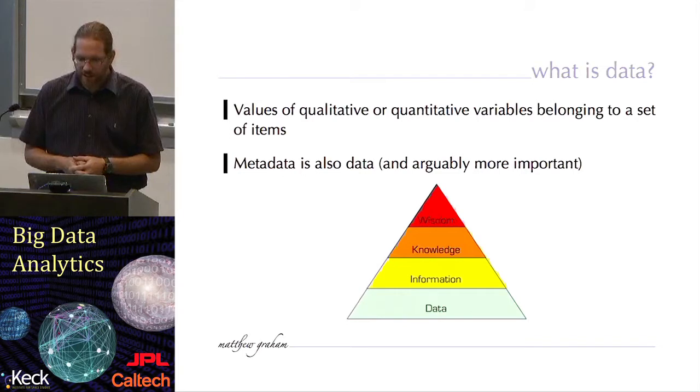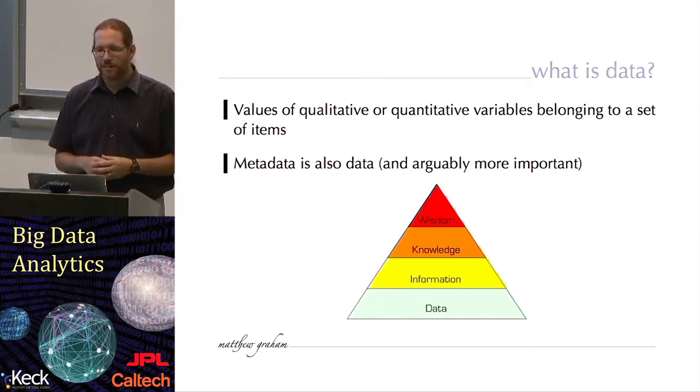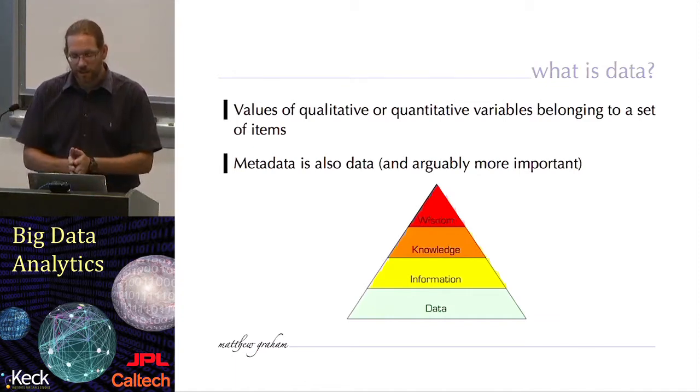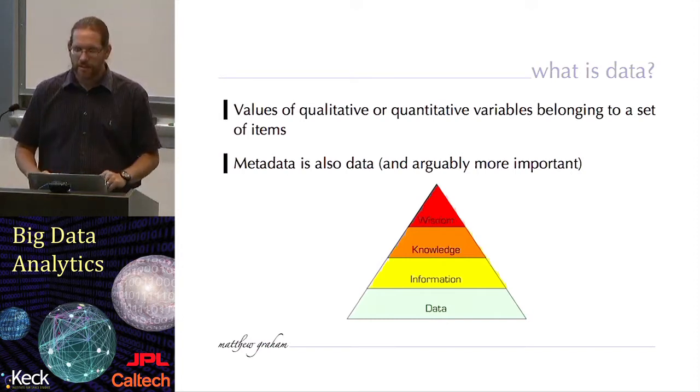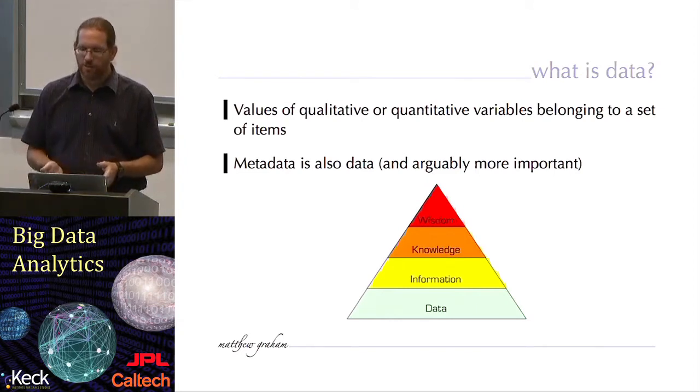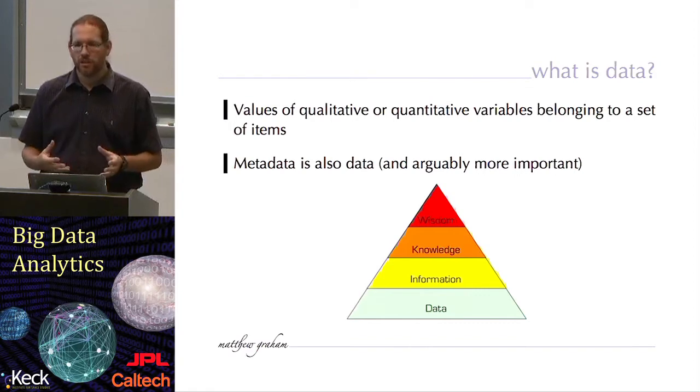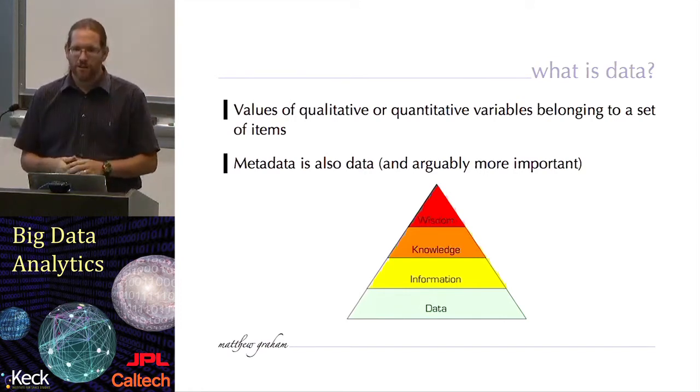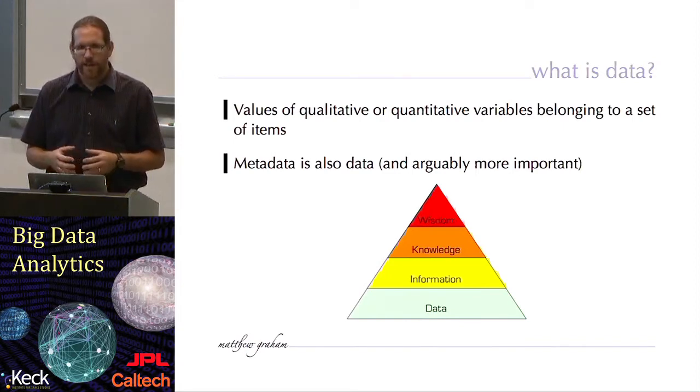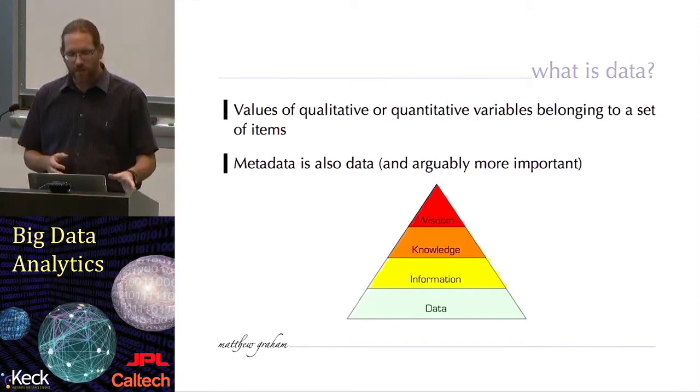There is this idea that the purpose of doing data analytics or doing data science is to extract information out of data, and there's this particular pyramid structure that you can see where you have data on the bottom layer, and the idea is that the cognitive value of what you're doing increases as you progress up the pyramid. So from data, we extract information, we combine information together to gain knowledge, and then ultimately, we're after wisdom derived from the knowledge. It's possibly a somewhat philosophical or fanciful notion, but certainly the types of techniques that you're hearing about in this course are relevant for getting information out of the data.